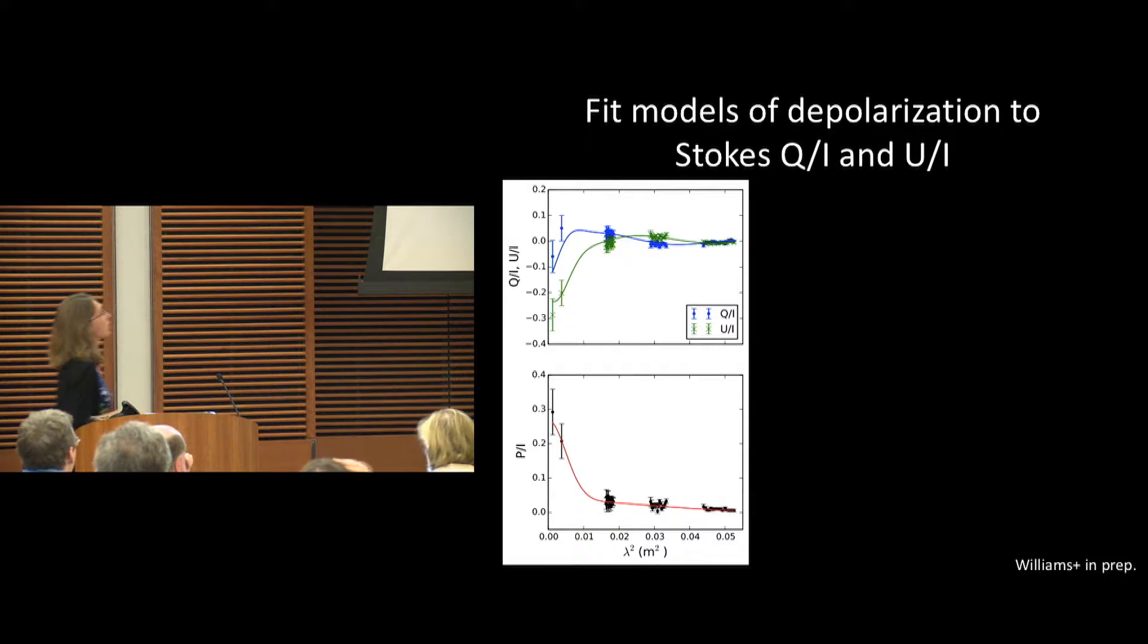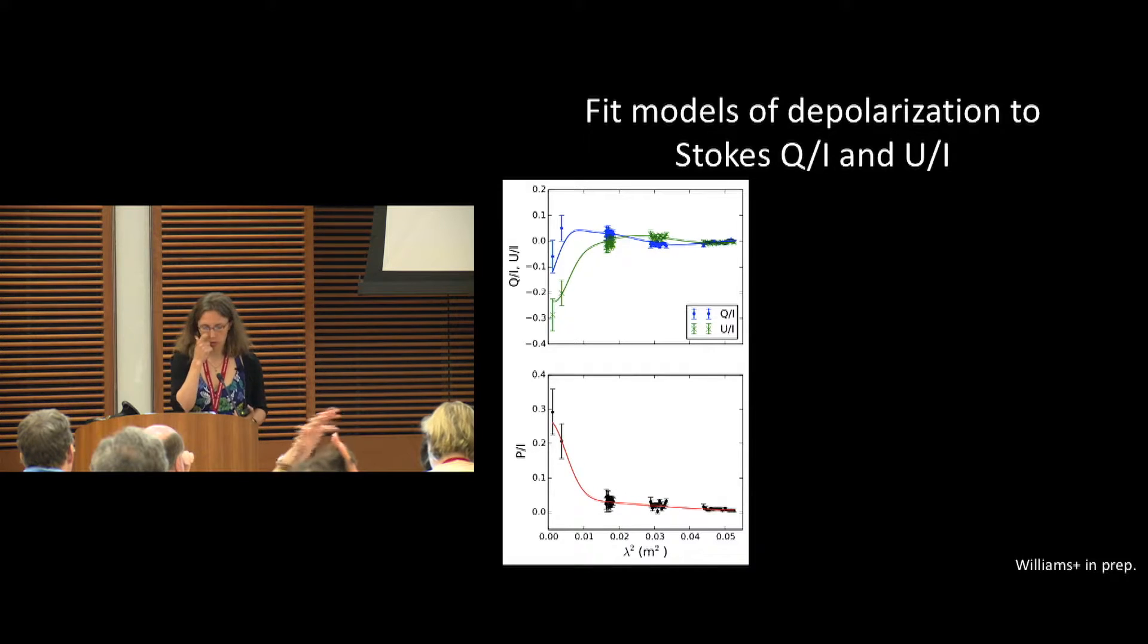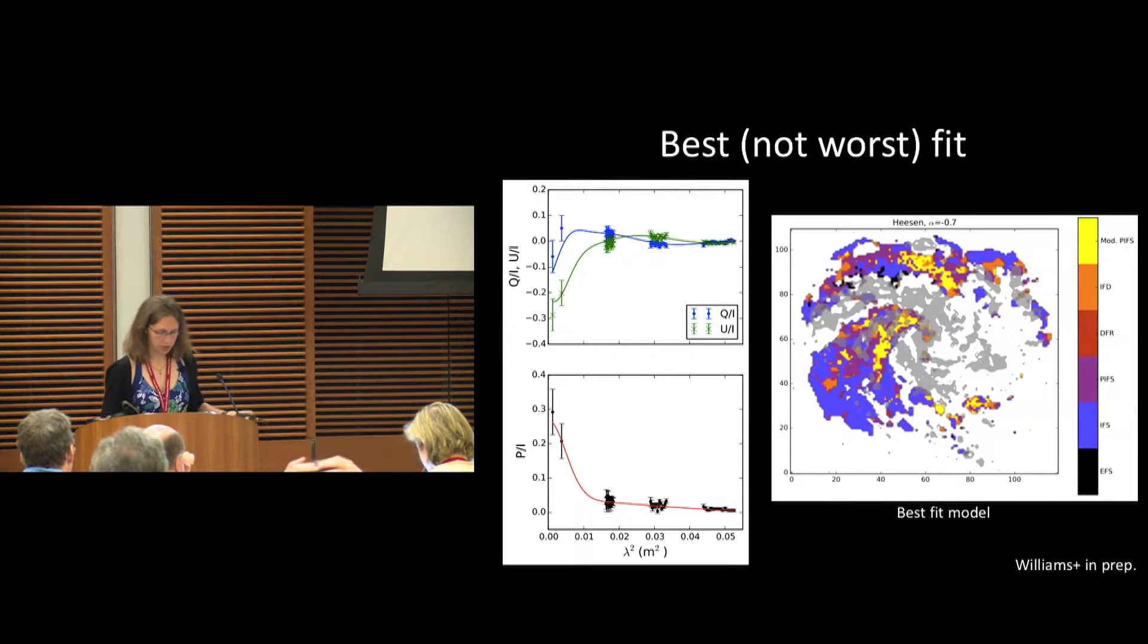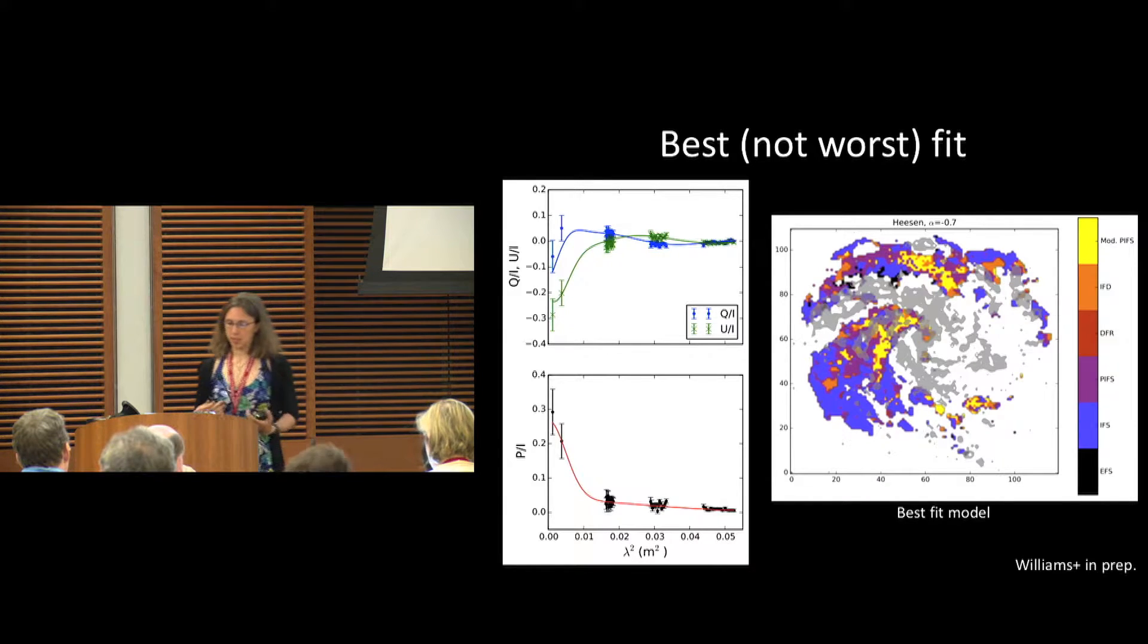I've fit models of Stokes Q and U across the entire disk of the galaxy. Here is Stokes Q and U in blue and green, and then down below you can look at how the total polarization changes as a function of wavelength.